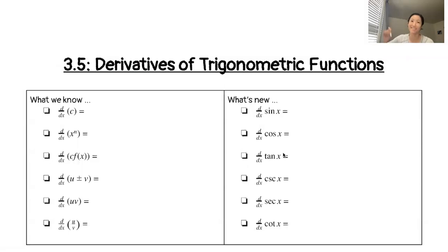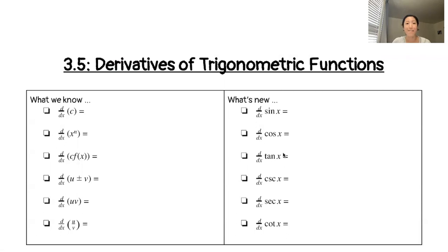All right, folks. I don't know why it's working now, but I think it's working, so we're going to take advantage of it. So 3.5 is a section on the derivatives of trigonometric functions. So before we get carried away with all the trig, let's talk about what we know so far.